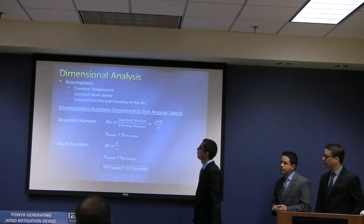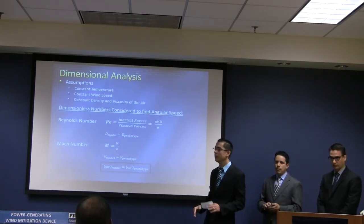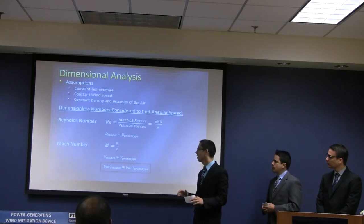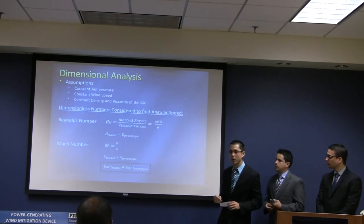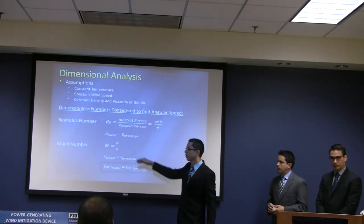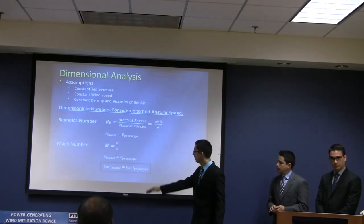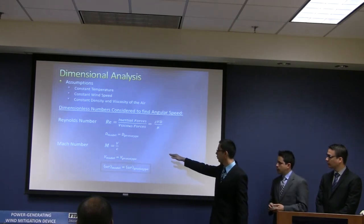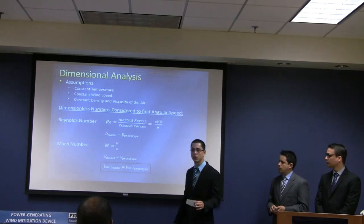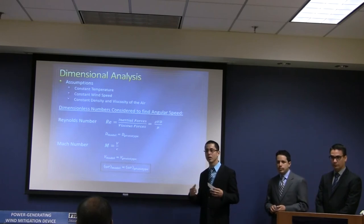We performed a dimensional analysis with the following assumptions: we kept temperature the same for both model and prototype, meaning density and viscosity of the air are the same, and velocity was kept constant. We started with the Reynolds number — the ratio of inertia to viscous forces — but keeping those assumptions brought us to a dead end, as we could not relate the model and prototype based on diameters. Therefore, we moved on to consider the Mach number, the ratio of object velocity to the speed of sound in the fluid, which was kept constant due to constant temperature. This gave us a linear relationship between the velocity of the model and velocity of the prototype, allowing us to estimate the angular velocity of the prototype.